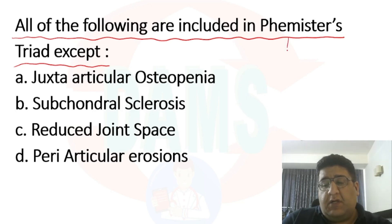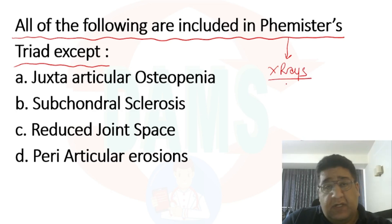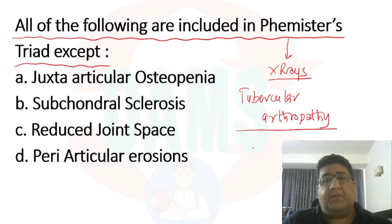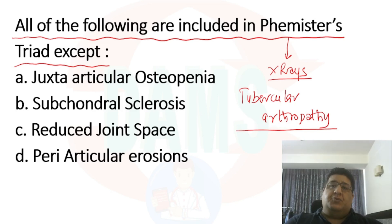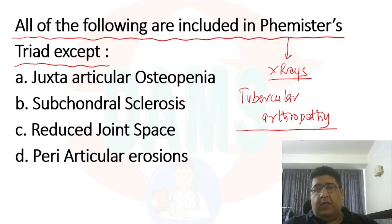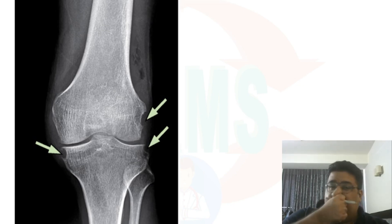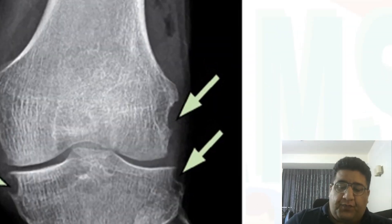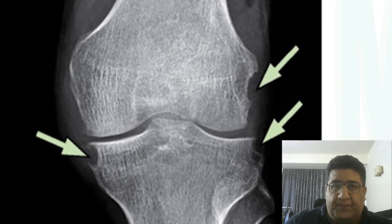Phemister's triad is a radiological triad which is seen on X-rays in something called tubercular arthropathy. When I say tubercular arthropathy, that means TB of any joint — usually a large joint — that can be knee, that can be hip, or anything. I'm giving you an example of the knee joint to make things easy.